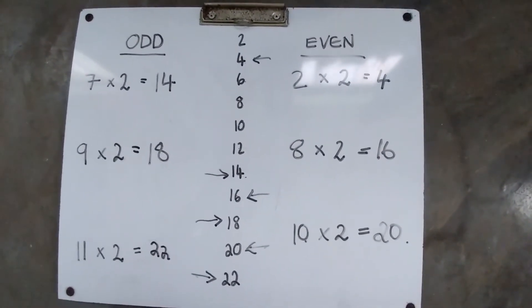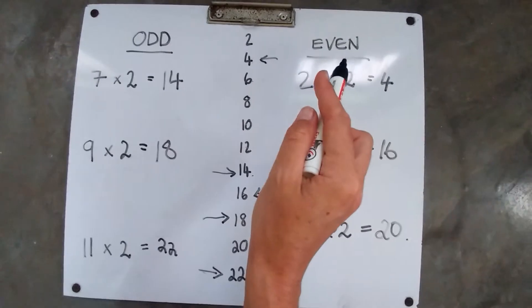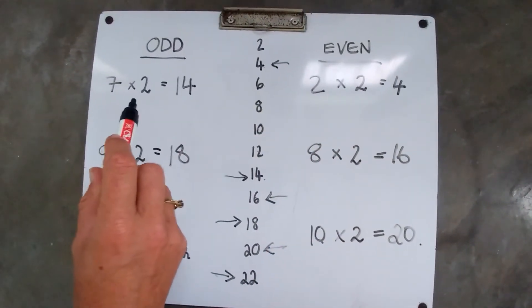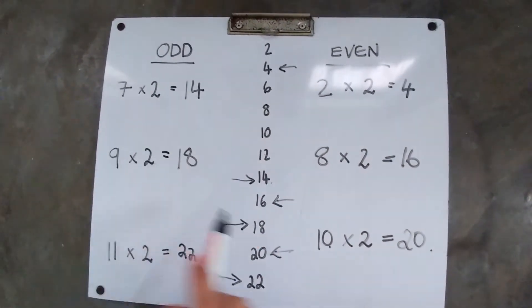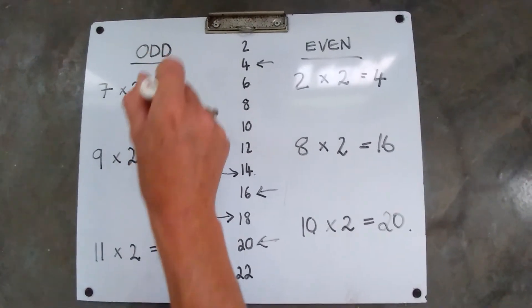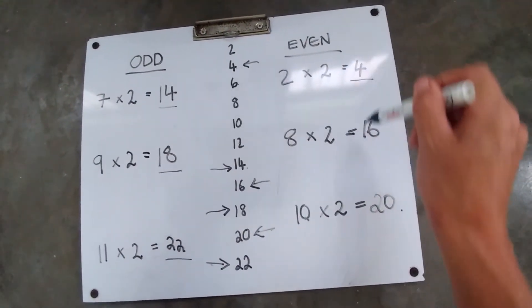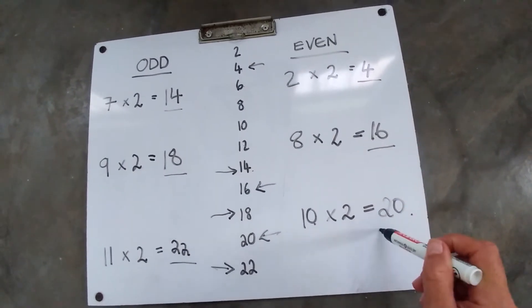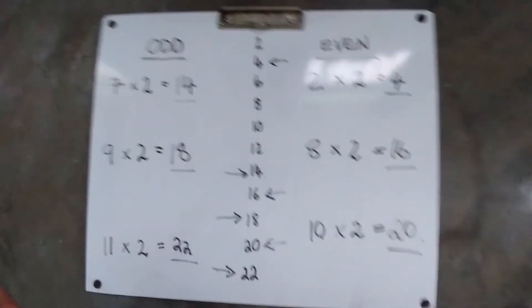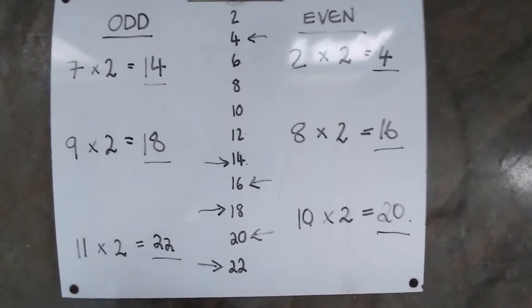Now we can see anything, an odd number or an even number times by 2, is giving us an even number always. 14 is even, 18 is even, 22 is even, 4 is even, 16 is even, 20 is even. They are all even numbers.